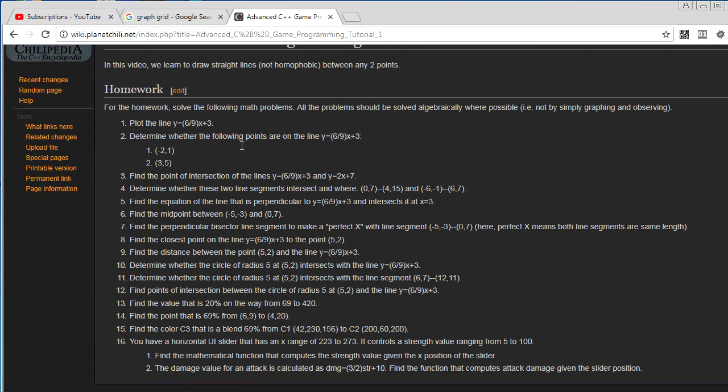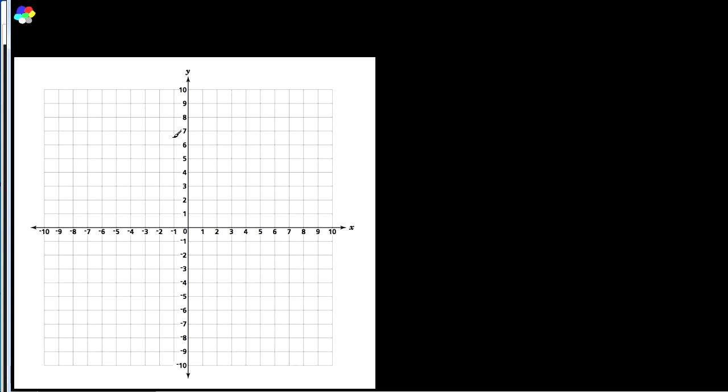Next question. Find the point of intersection of the lines y is equal to 6 over 9x plus 3, and y is equal to 2x plus 7. So, for this boy here, what we are going to do, what we're going to do is, we basically need to find the point that satisfies both of these equations simultaneously. And the way you do that is, you basically bring them into a single equation.